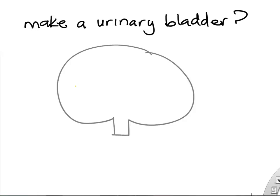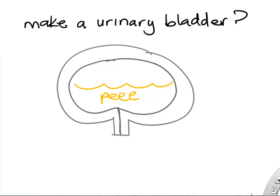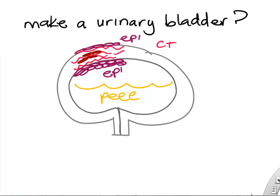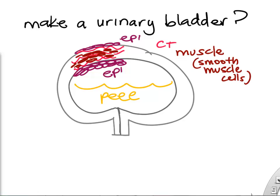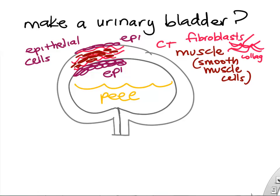Let's make a urinary bladder. It holds urine, so we have an inside that needs to be lined and an outside that needs to be covered — we do that with epithelium. Different types of epithelium are used for different organs. We need connective tissue to hold everything together and then smooth muscle in order to contract when we want to expel urine. So again: epithelial cells, connective tissue cells like fibroblasts, and smooth muscle cells.